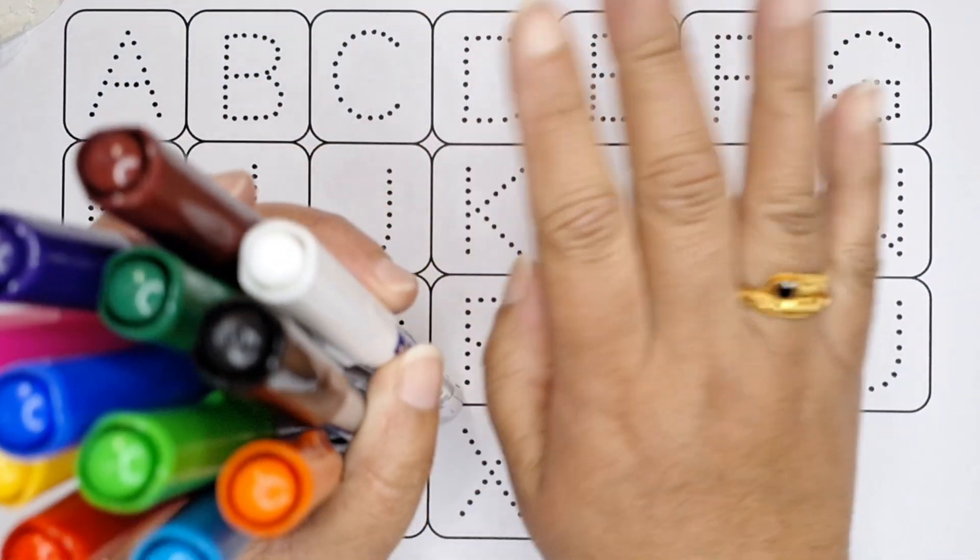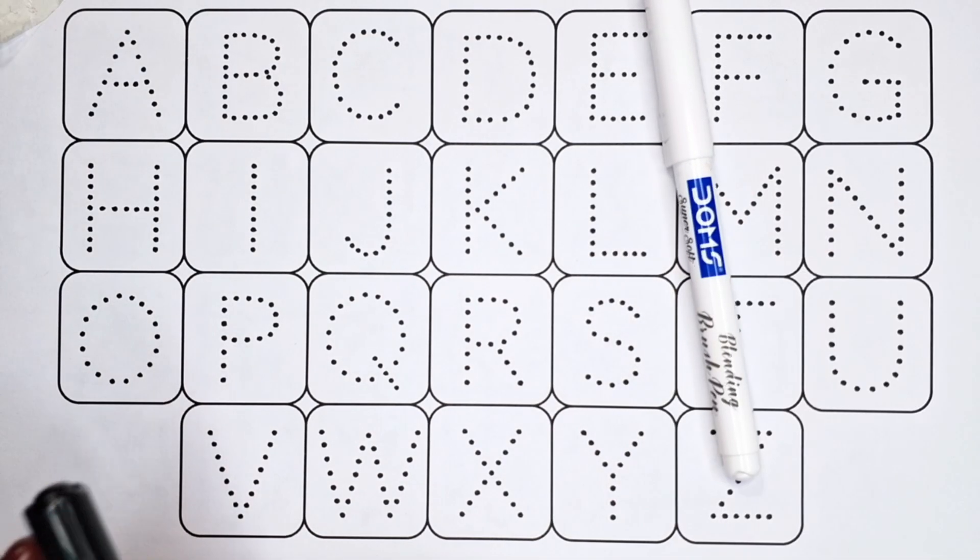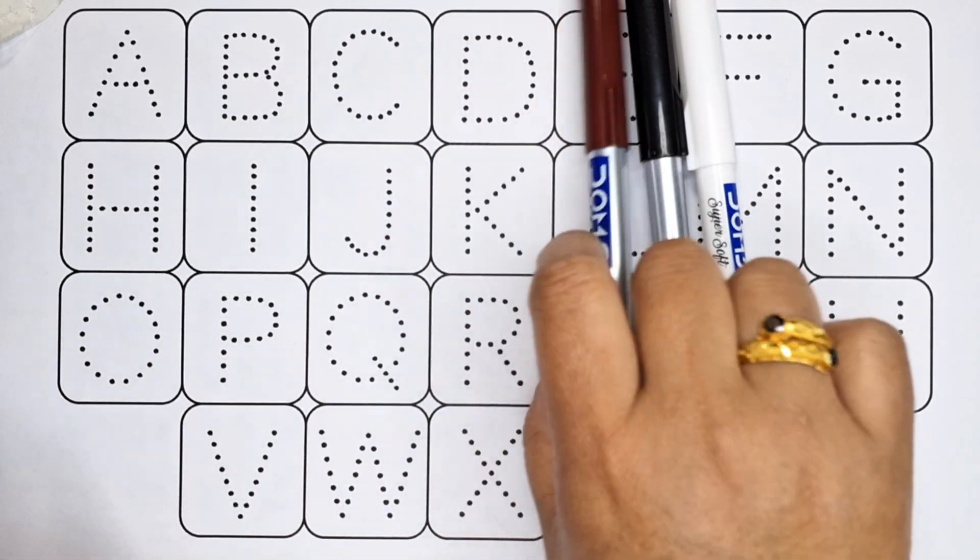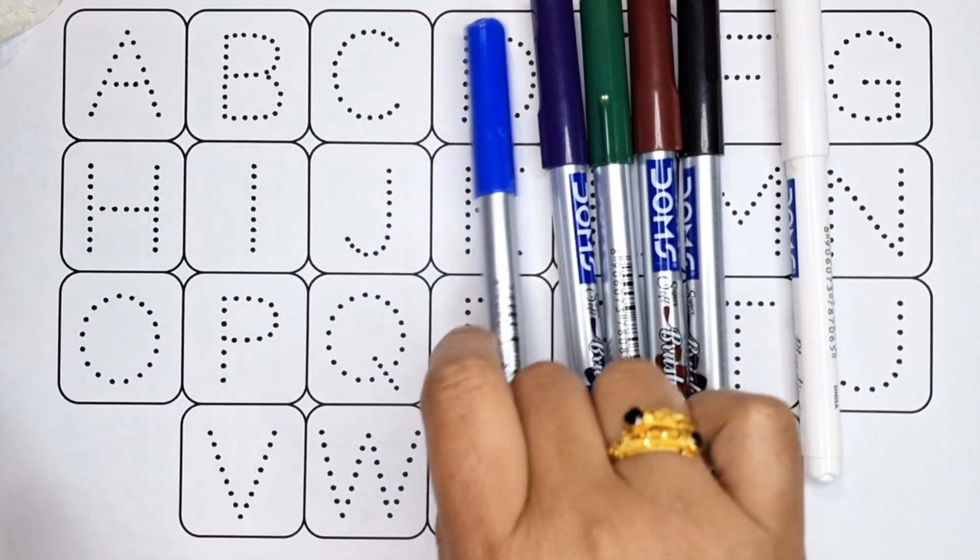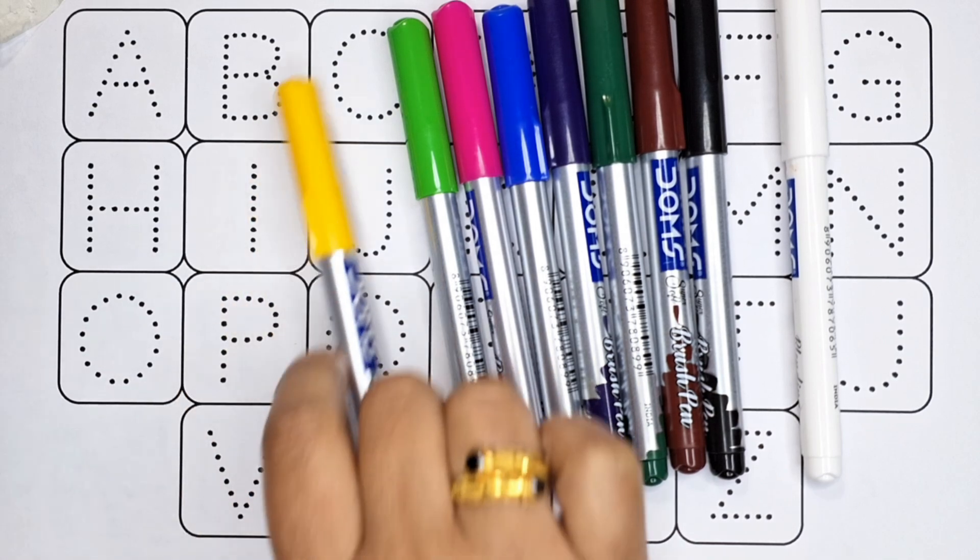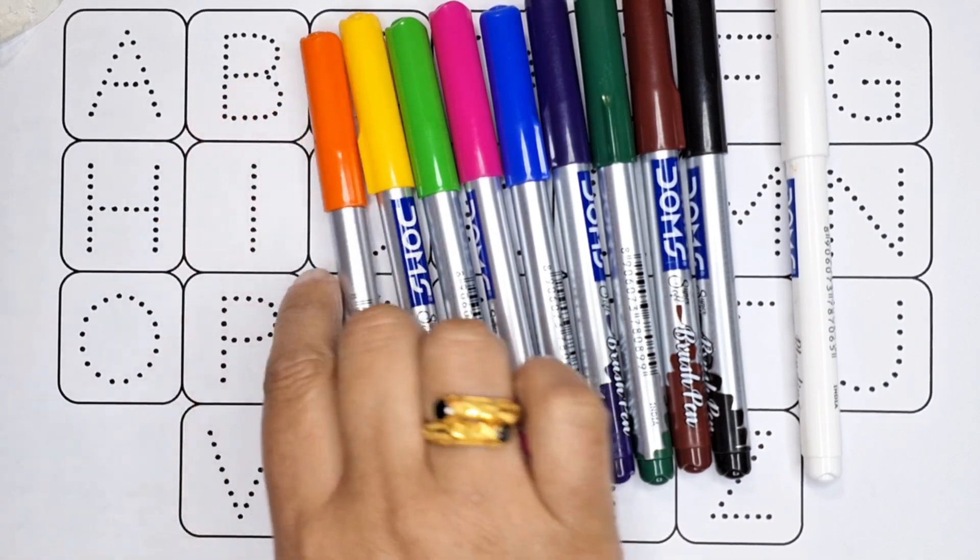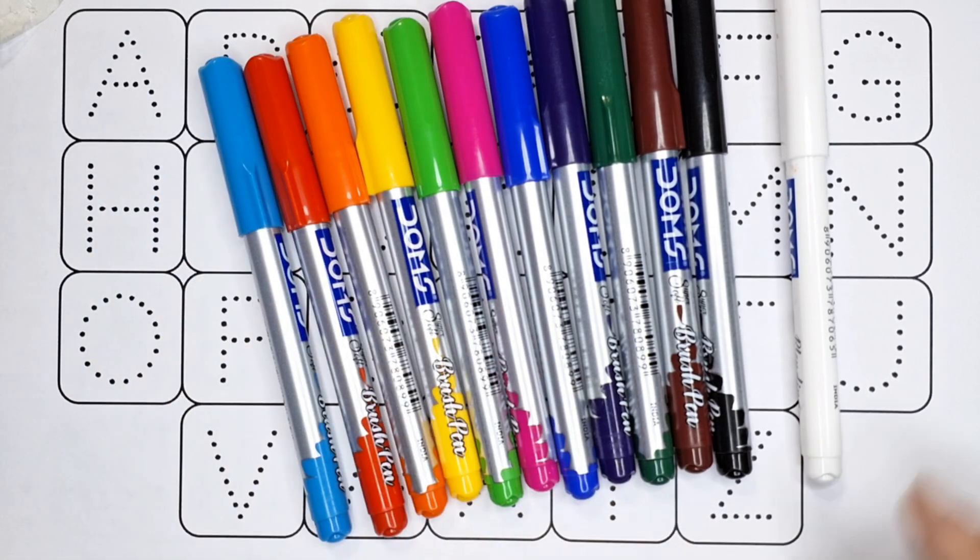Hello, let's learn some colors. White color, black color, brown color, dark green color, purple color, blue color, pink color, green color, yellow color, orange color, red color, and sky blue color.